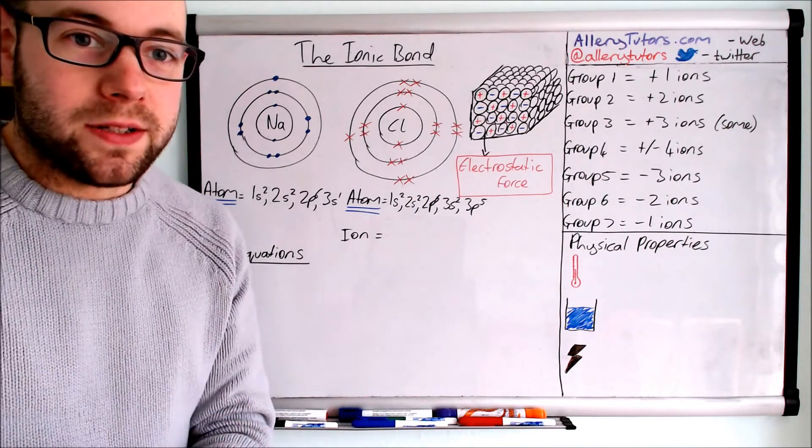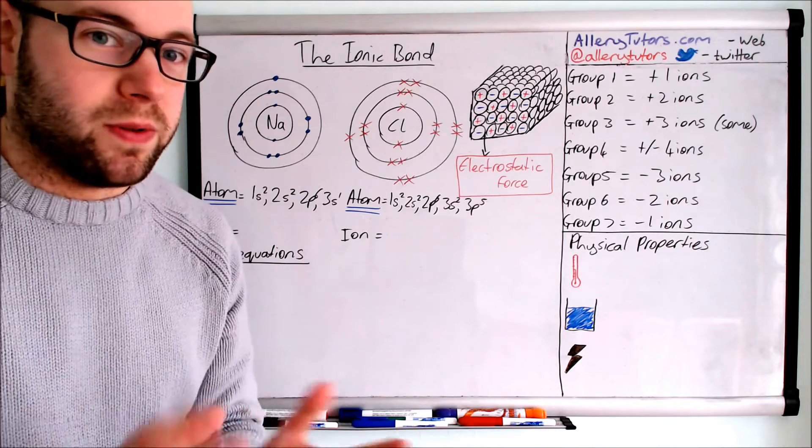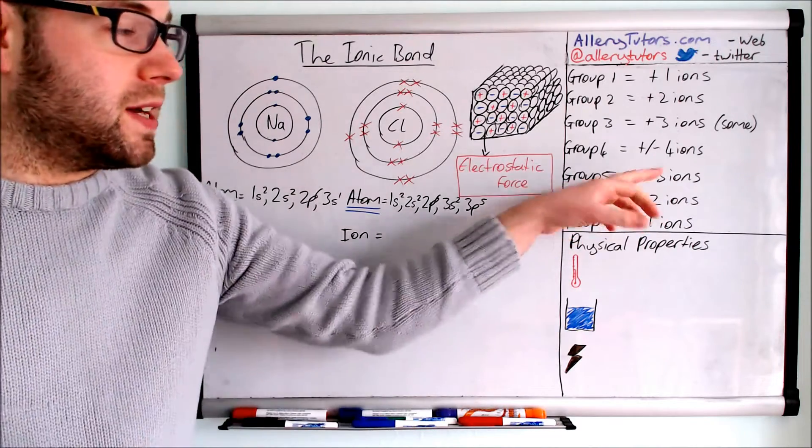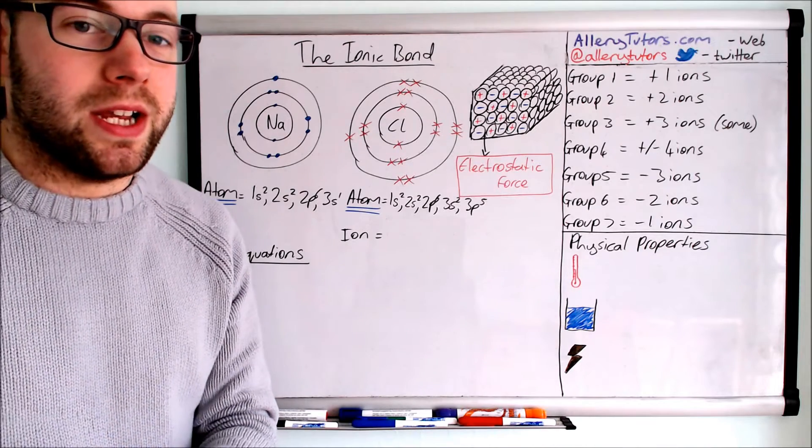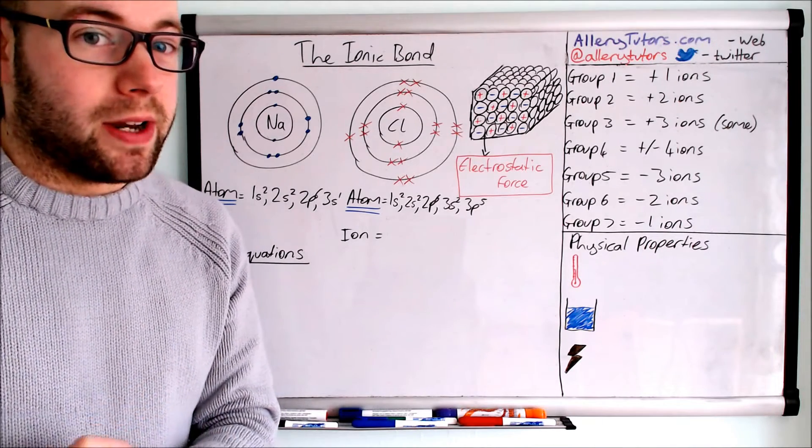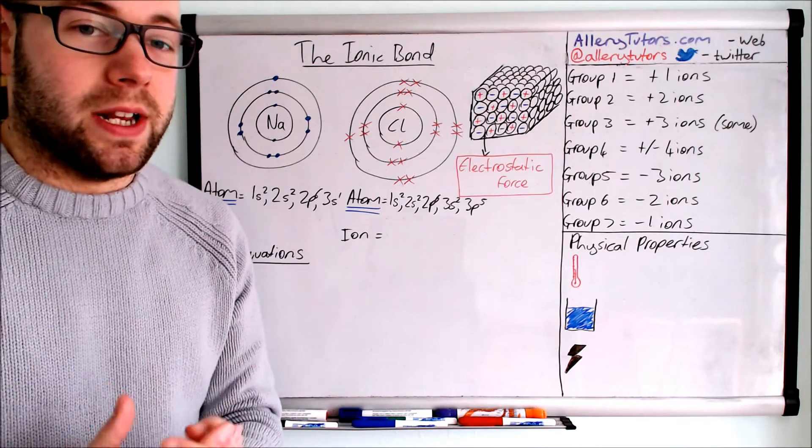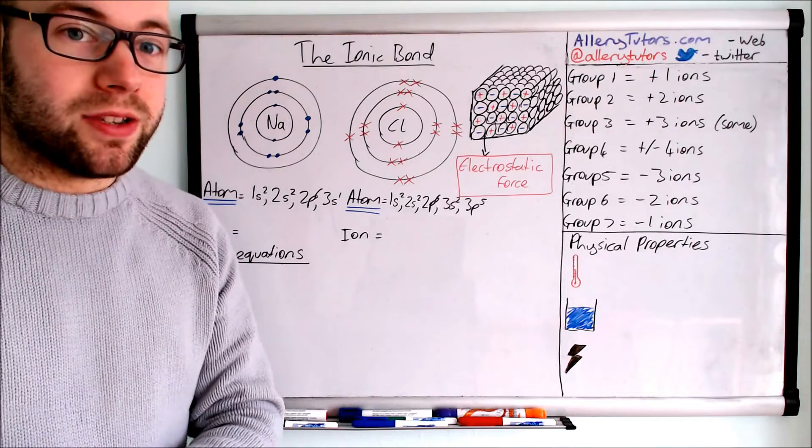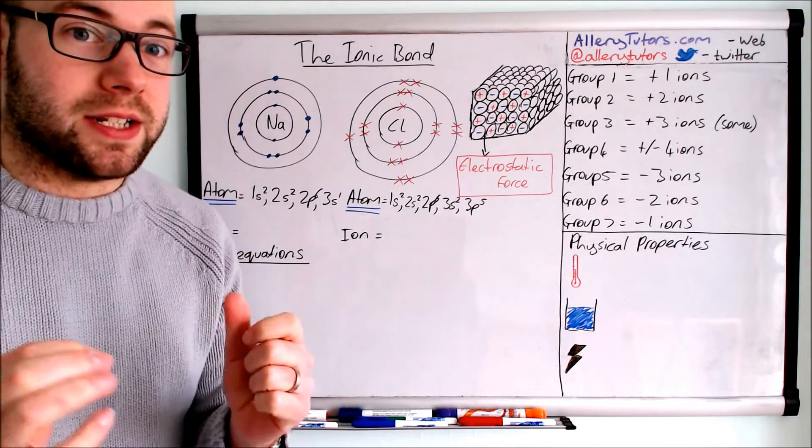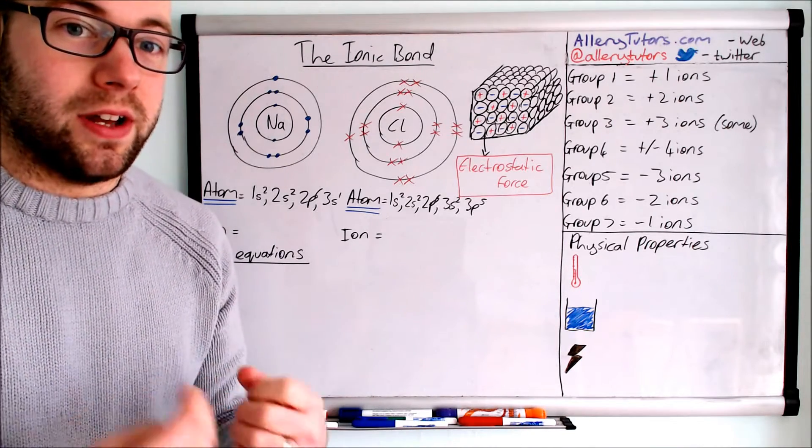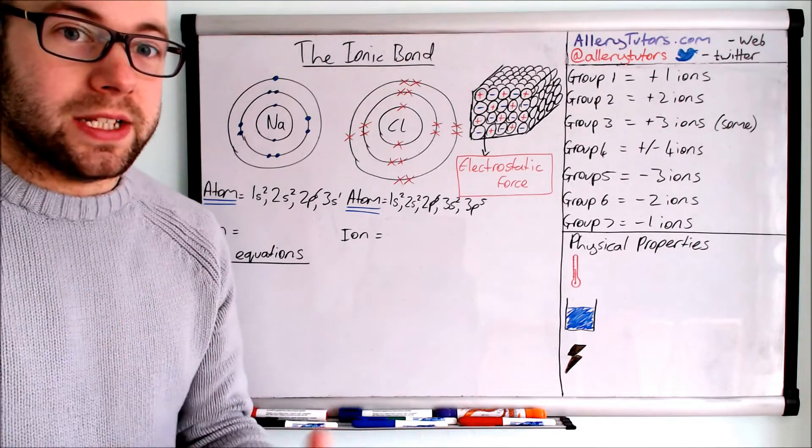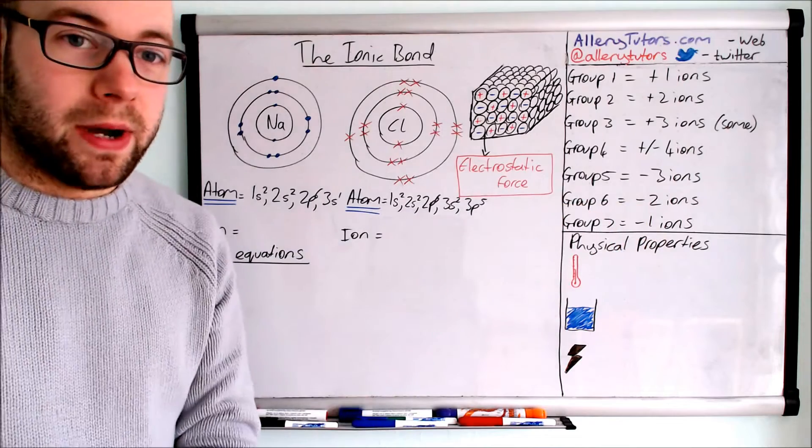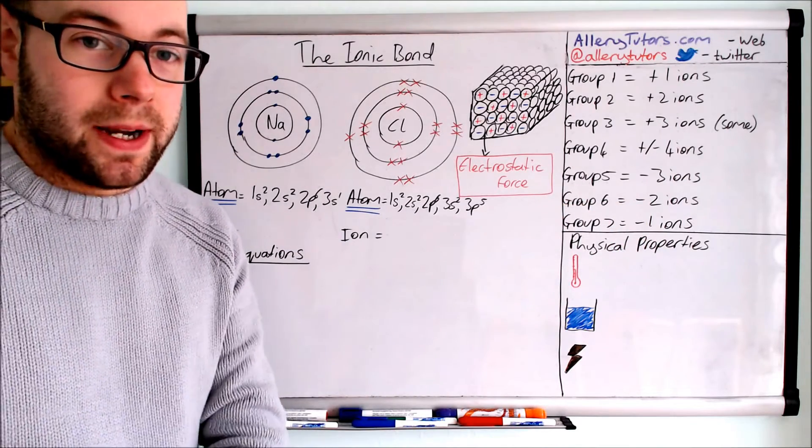Group fours are plus or minus four. They've got no preference whether they lose or gain four electrons because they're halfway in between. Group fives form minus three ions because it's easier for group five elements to gain three electrons to get full shell than to lose the five that they already have. Remember, the electrons are negatively charged, so if you gain electrons that are negatively charged, the overall ion that's formed is going to be negative as well. Group sixes form minus two ions and group sevens form minus one ion.